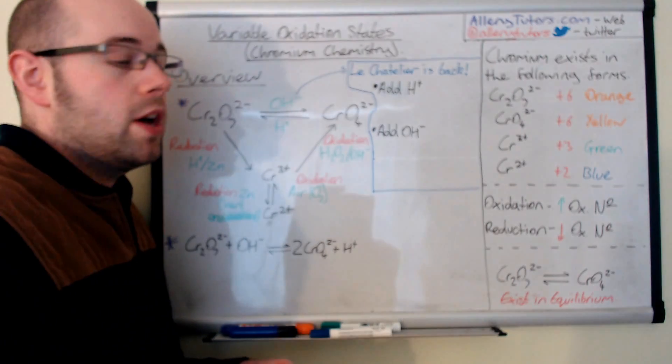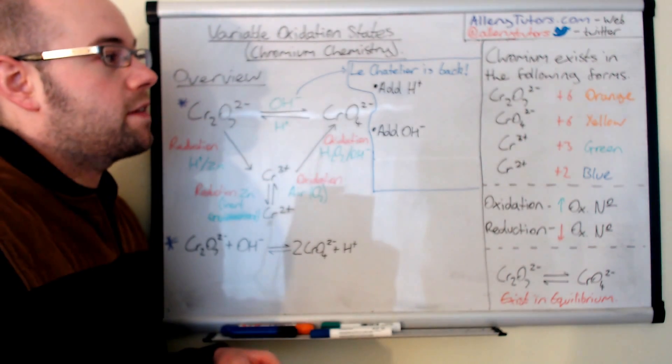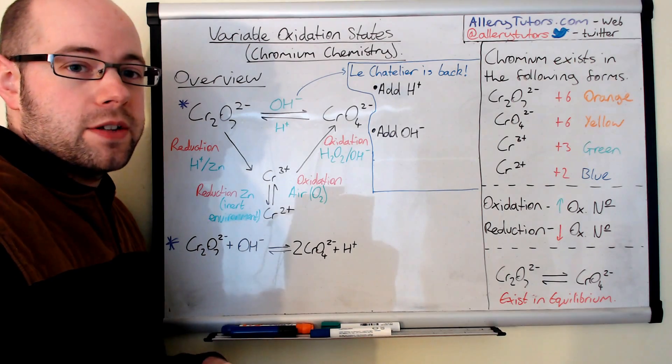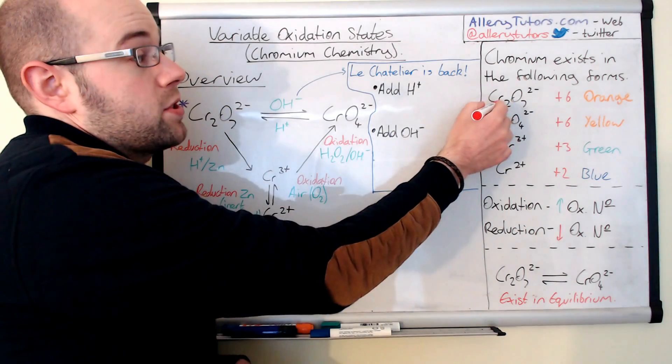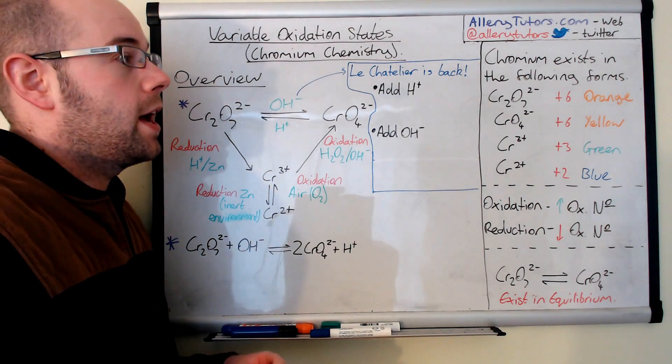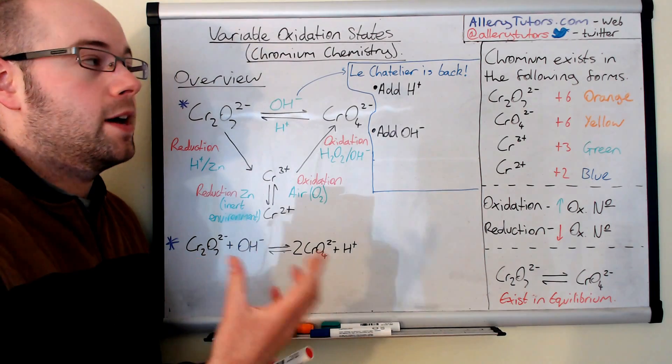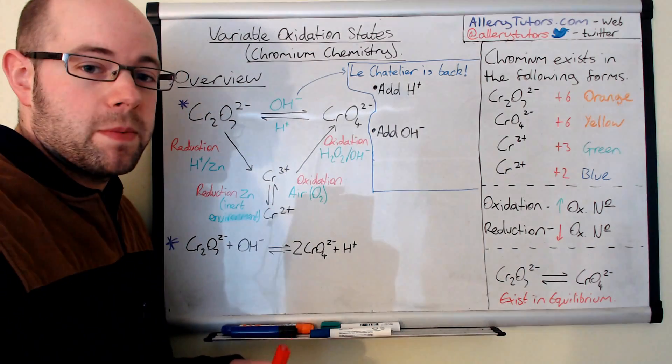The overall charge of the whole molecule is minus two. So therefore the chromium, which is the Cr₂, has got to be plus six as a result. Because if we had two lots of plus six that would give it plus 12 and the oxygen is minus 14 combined and the overall charge is minus two. So in this case the oxidation state of chromium here is plus six.